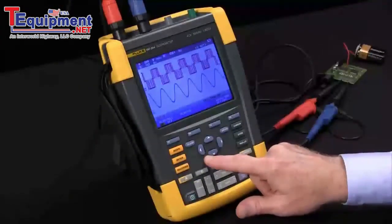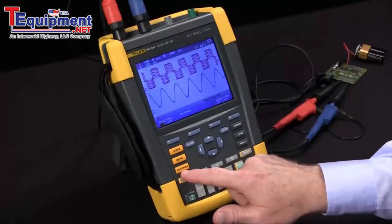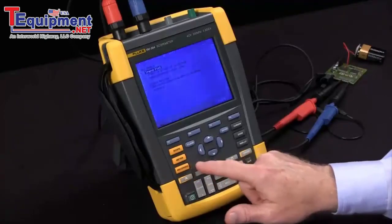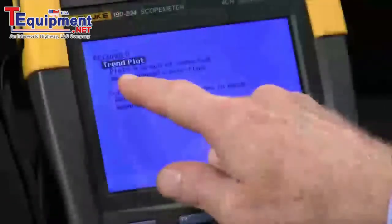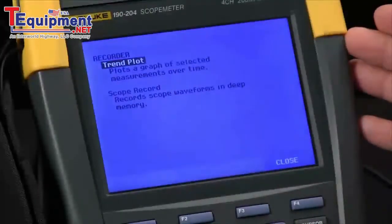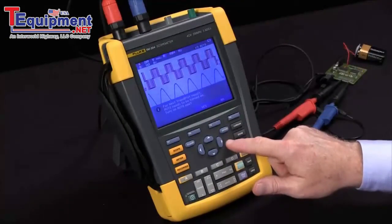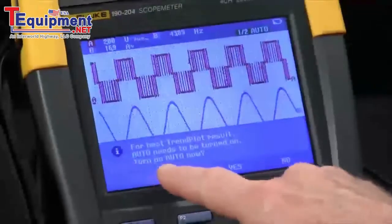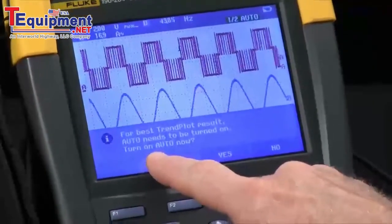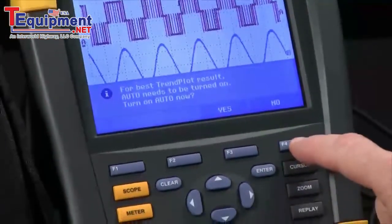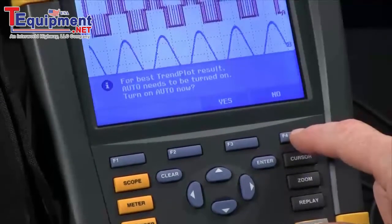We're ready to start a recording. We'll hit the recorder button for that. Trend plot. We'll take those readings that we had highlighted and trend them. We'll simply hit the enter key. We'll choose not to have the auto reset control our gain so we'll say no with F4. Yes might be a good option but we'll say no.